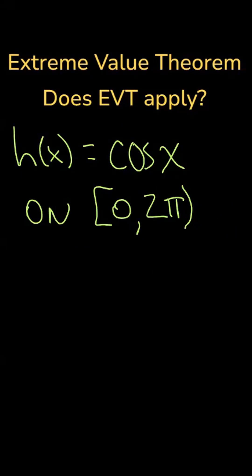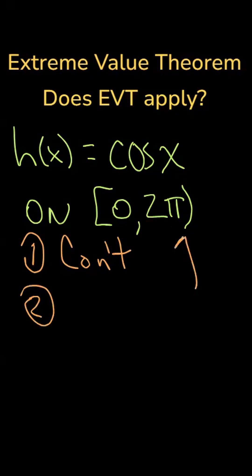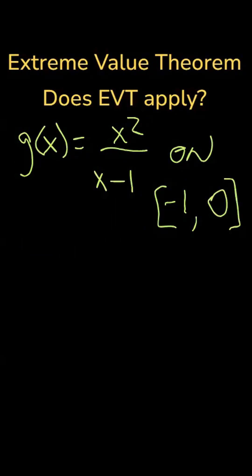How about this one? h of x equals cosine of x on the interval 0 to 2 pi. Well, yes, it is continuous because trig functions are continuous on their domain, and cosine's domain is all real numbers. But, notice the right endpoint is not included, so the extreme value theorem does not apply.